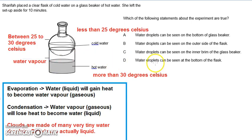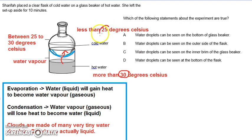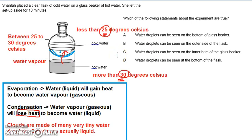Water droplets can be seen at the bottom of the flask. At the bottom of the flask, we have water vapor at about 30 degrees Celsius touching the colder water, which is less than 25 degrees. From a higher temperature to a lower temperature, the water vapor of 30 degrees touching a surface of 25 degrees will lose heat. When the water vapor loses heat, there will be condensation. So option D is correct as well.